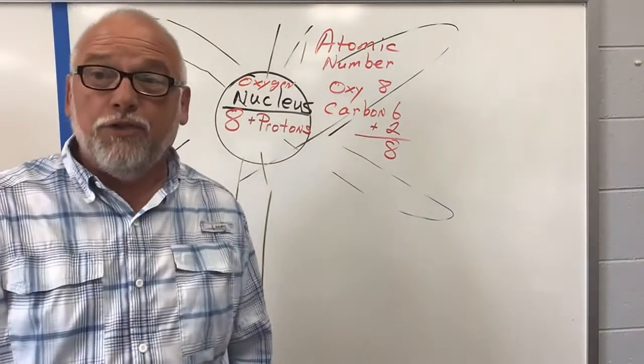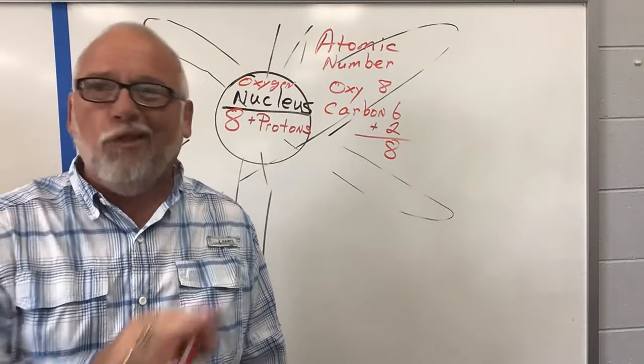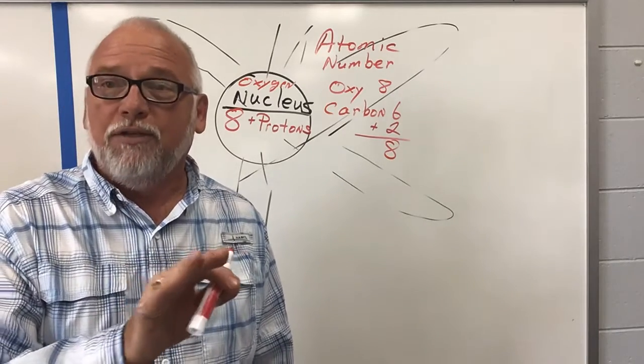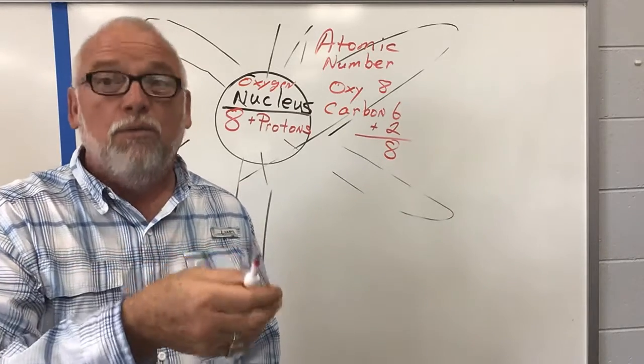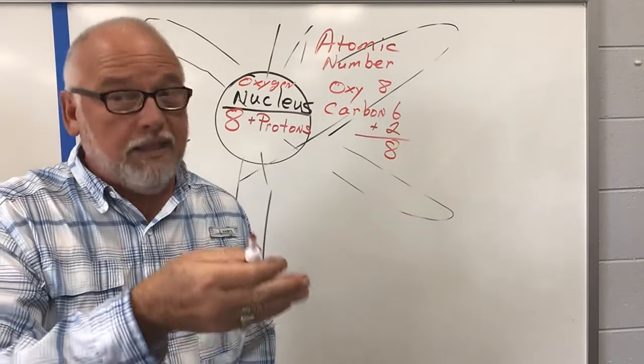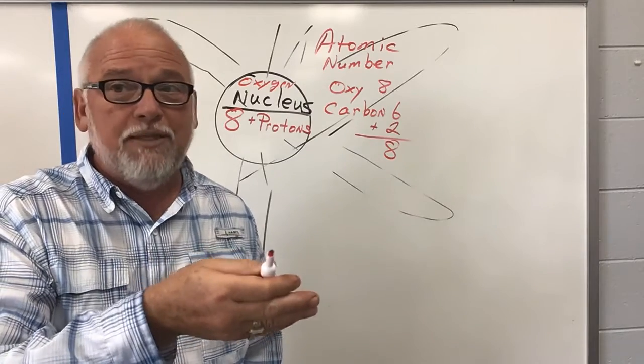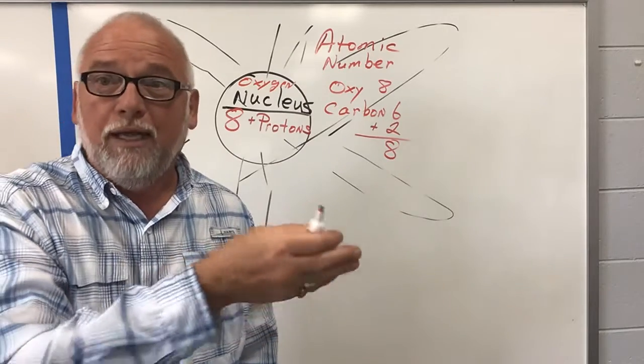This is called the transmutation of elements. It's what alchemists were trying to do for thousands of years, changing base metals like lead into gold. Well, we really can do that. It takes a lot of energy, and it's very expensive to do, but we could turn lead into gold.